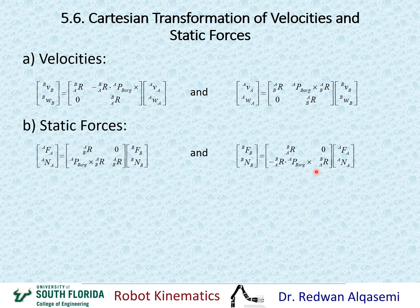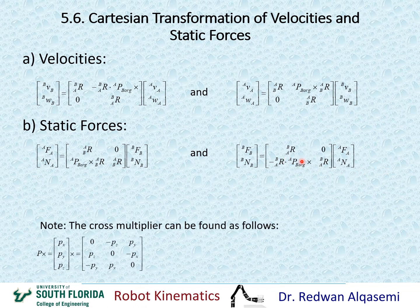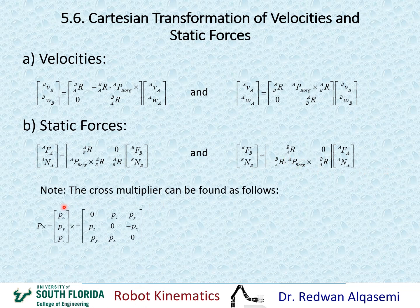To define the cross multiplier: if we have a vector with a cross multiplier and the vector is defined by px, py, and pz, we can replace the cross product operation with a 3x3 skew-symmetric matrix. So the term P_B-origin relative to A cross is replaced by a matrix of that form.